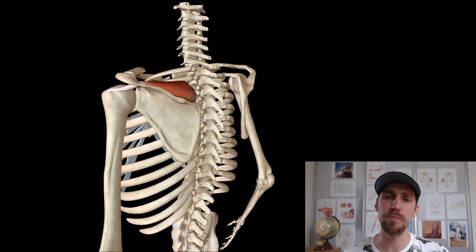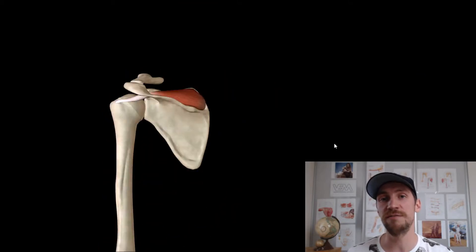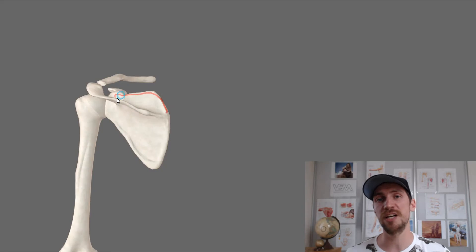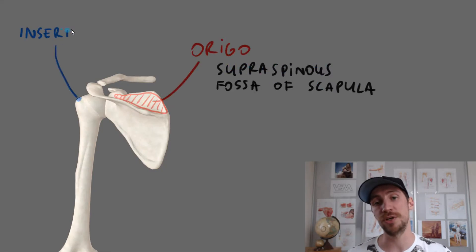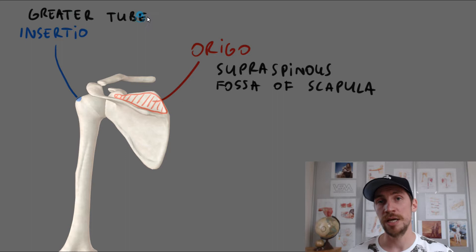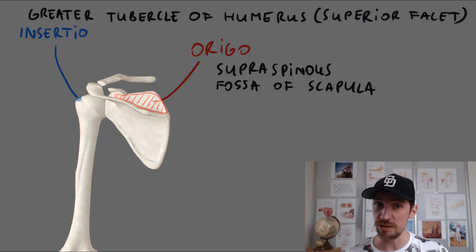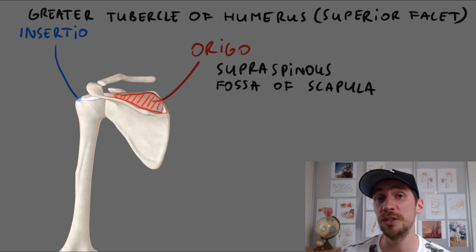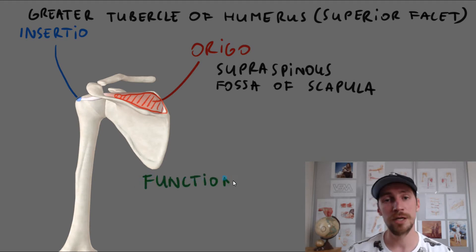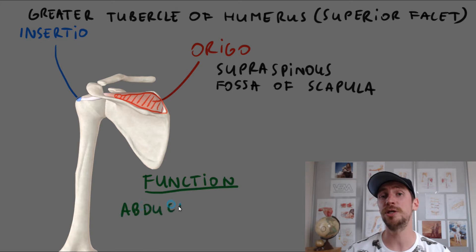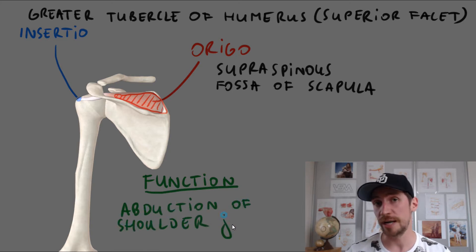Now we are talking about supraspinatus. This particular muscle originates from the supraspinous fossa of the scapula and it inserts into the greater tubercle of the humerus — in particular the superior facet of the greater tubercle of the humerus. The primary action of the supraspinatus muscle is abduction of the shoulder. It will also stabilize the glenohumeral joint, but abduction is definitely the more important action.